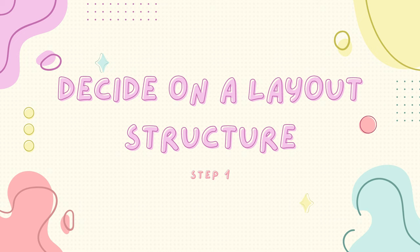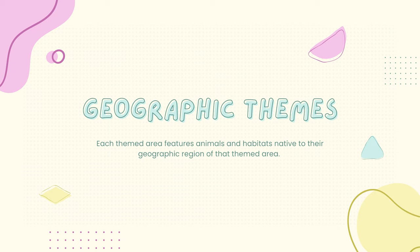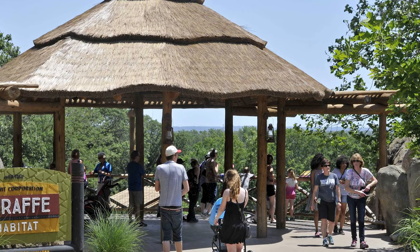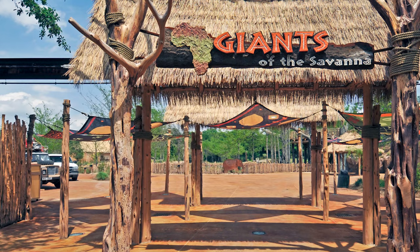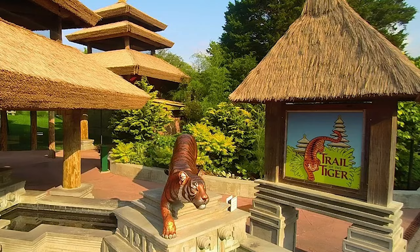Tip one is deciding on a basic layout structure for your zoo. There are a couple of common structures that zoos use. The first one is geographic themes, where they arrange the zoo based on different geographic regions like an African savanna or an Asian rainforest.